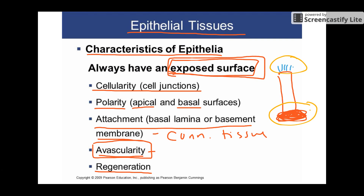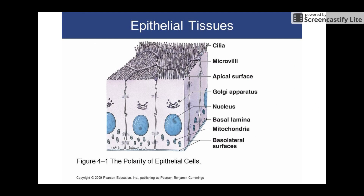Think about your skin — you're constantly shedding the epithelial layer of your skin and having to grow new cells to replace it. So here's a diagram of some epithelial cells. Notice they're tightly packed, notice the top looks very different from the bottom, and notice there's a layer of connective tissue down on the bottom — just to give you an idea of some of the features that you'll find in epithelial tissues.